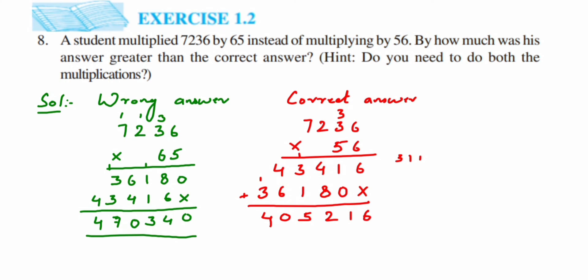So we got both the answers. Now what they're asking in the question, they're asking us by how much was his answer greater than the correct answer. So the student got 470340 in his paper instead of getting 405216. So they're asking this number 470340 is how much greater than this number, so we have to subtract these two numbers.